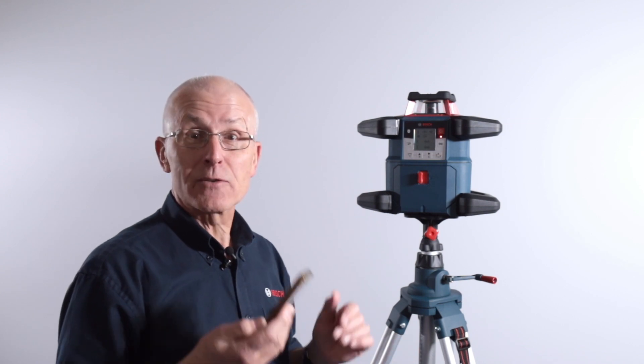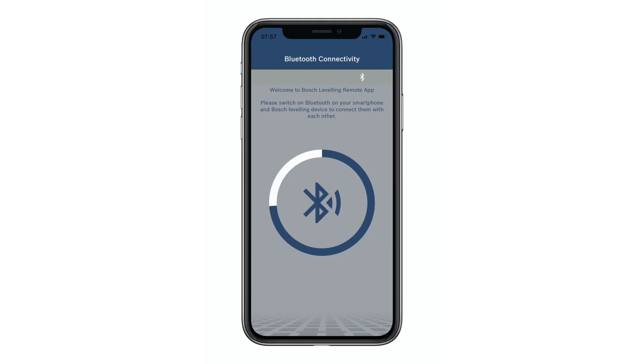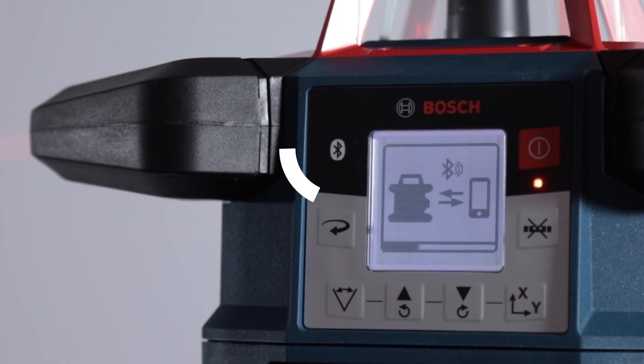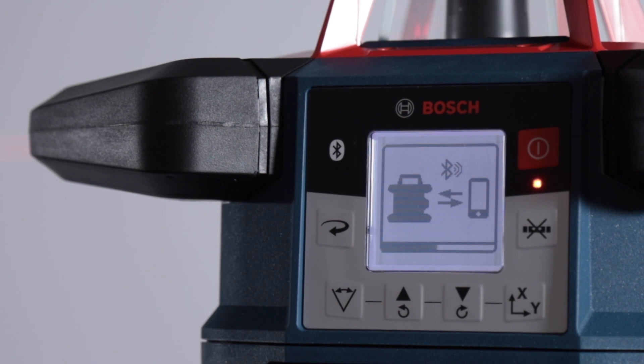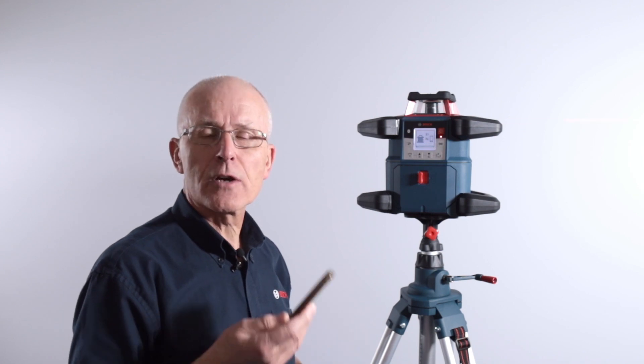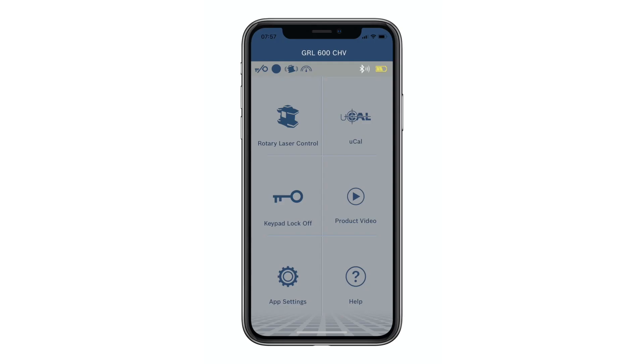All you need to do is make sure your Bluetooth is switched on on the smart device, then select this button here top left until you see on the screen the indication that the product is waiting to pair. You'll be able to then use it in conjunction with the leveling remote app.